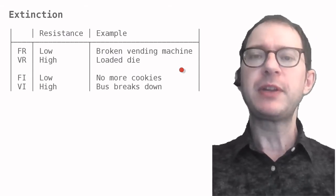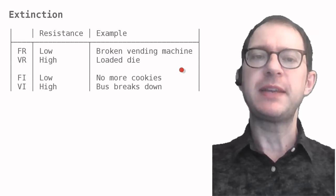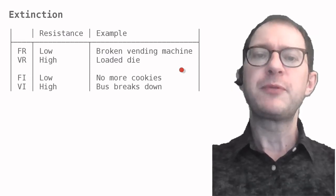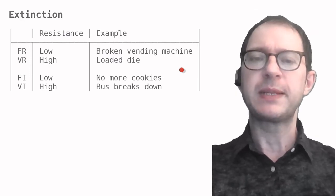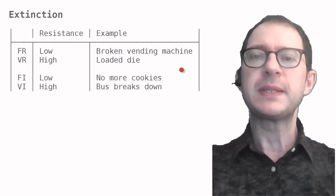For example, when Pavlov stopped offering meat after ringing a bell, his dog stopped salivating at the sound of the bell. If you want, you can say that extinction is also a particular schedule of reinforcement, one under which reinforcement is never available.